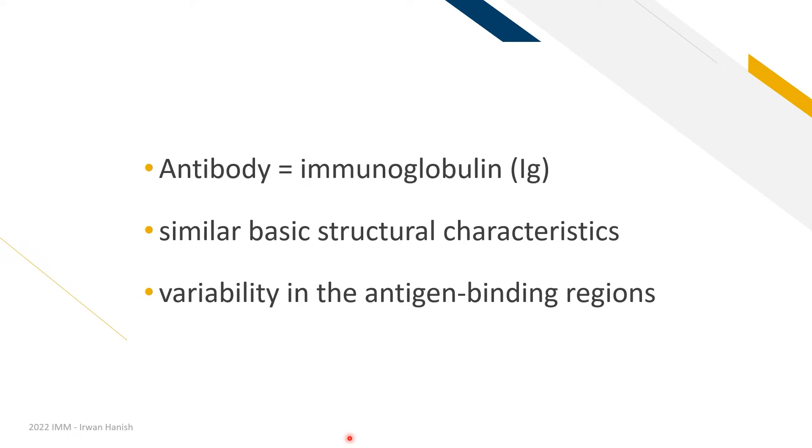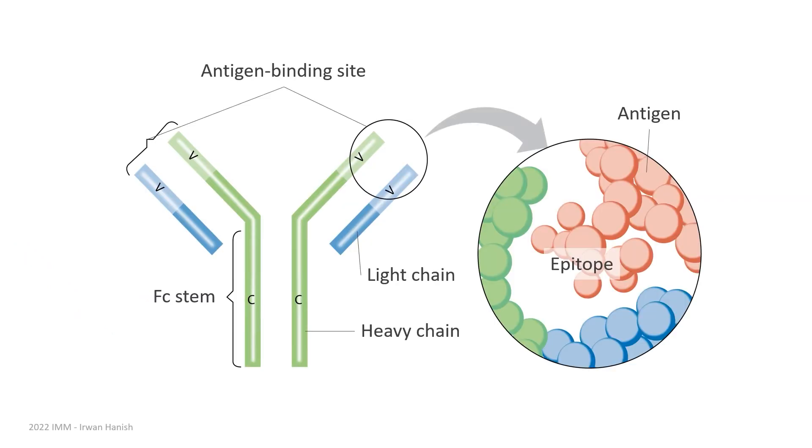All antibodies have basic similar structural characteristics. And that's how we class them together. What's different among them is the region where they bind to antigen. So antibodies look like the letter Y. And at the upper tip of it, you have the antigen binding site. The antigen binding site is where the epitope will bind to, and where you can find most structural varieties among the antibodies.